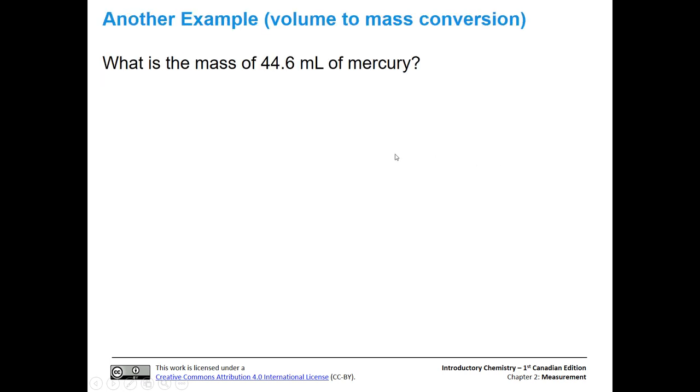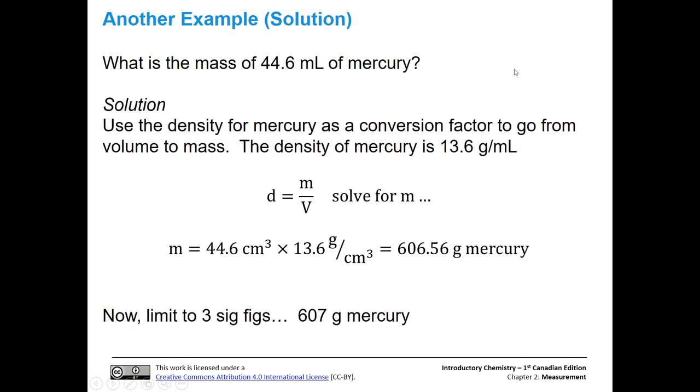Alright, let's do another one. What is the mass of 44.6 milliliters of mercury? So why don't you go ahead and try that. D equals m over V, and you have the density for mercury in the table previously.